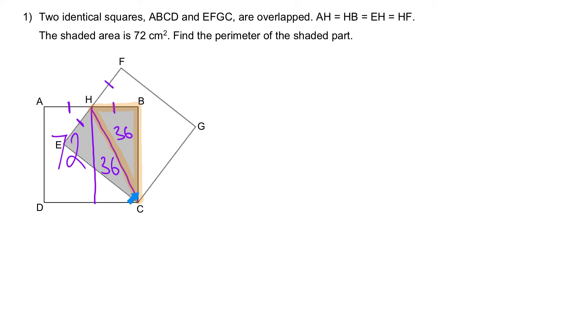So, the area of this entire square is 72 plus another 72. The first step, area of square, this will be ABCD.